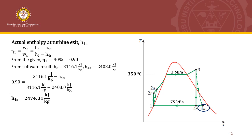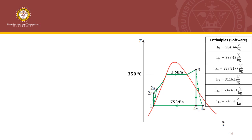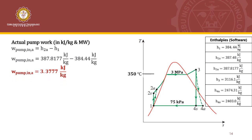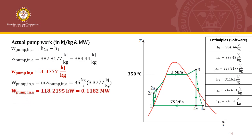Now that we have the actual enthalpies at the exits of the pump and turbine, we can determine the unknown quantities. For the actual pump work, we use the formula H2A minus H1, the difference of enthalpies at the pump exit and inlet. Substituting the values, the actual pump work input is 3.3777 kJ per kg. Multiplying by the mass flow rate, the actual pump power input is 0.1182 megawatt.